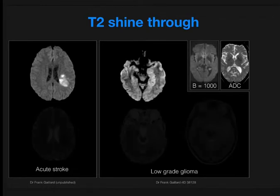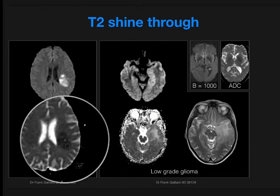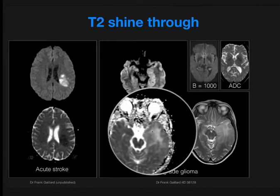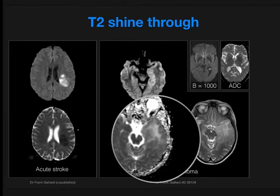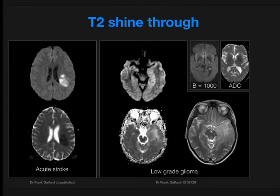We would always want to review ADC maps. On this side we can confirm that the restricted diffusion is abnormally high — the ADC values are lower than normal, blacker than what that tissue should be — whereas in the low-grade glioma that tissue demonstrates higher signal intensity on ADC, so higher ADC values. This is not restricted diffusion but rather facilitated diffusion, and we would say the high signal on DWI is due to T2 shine-through. In fact, all diffusion-weighted images have a combination of both T2 signal and diffusion depending on the tissue.